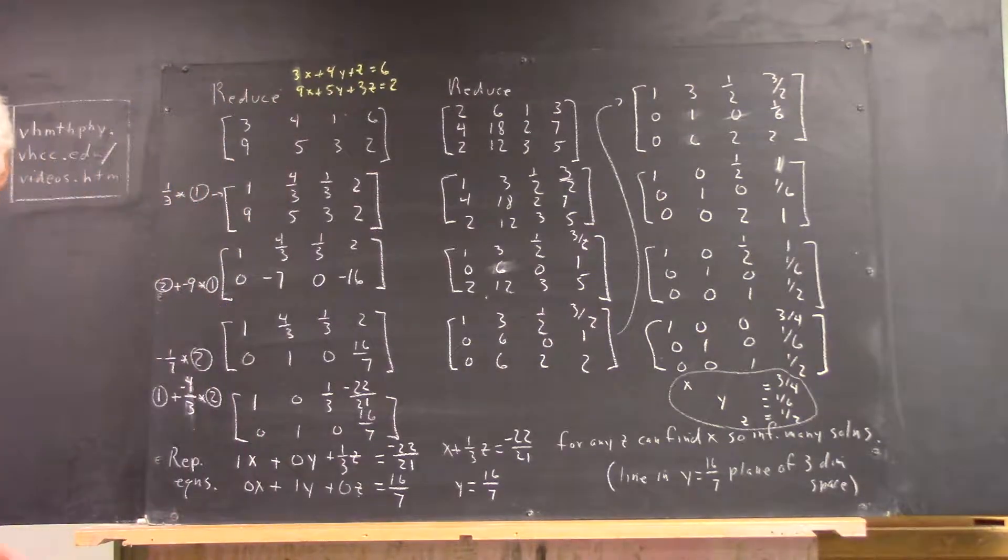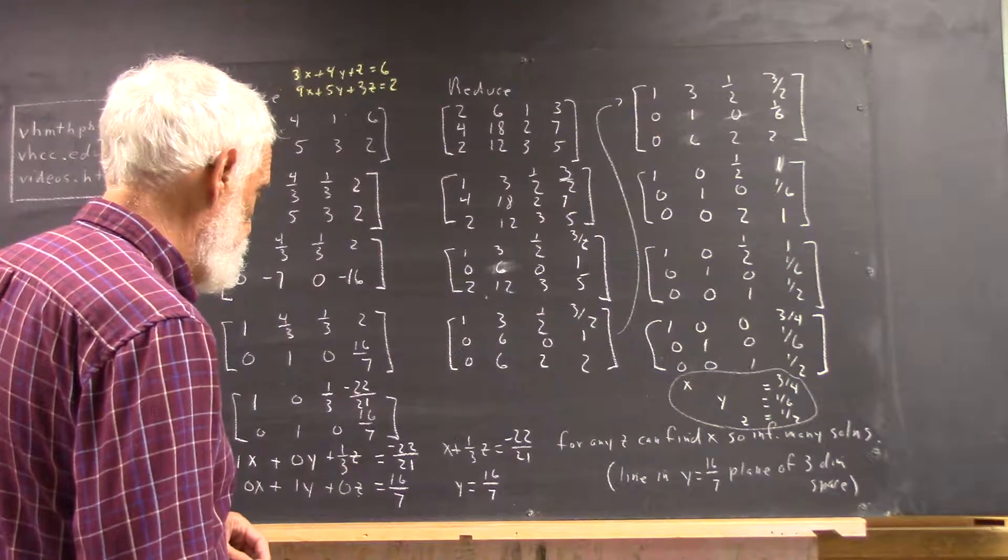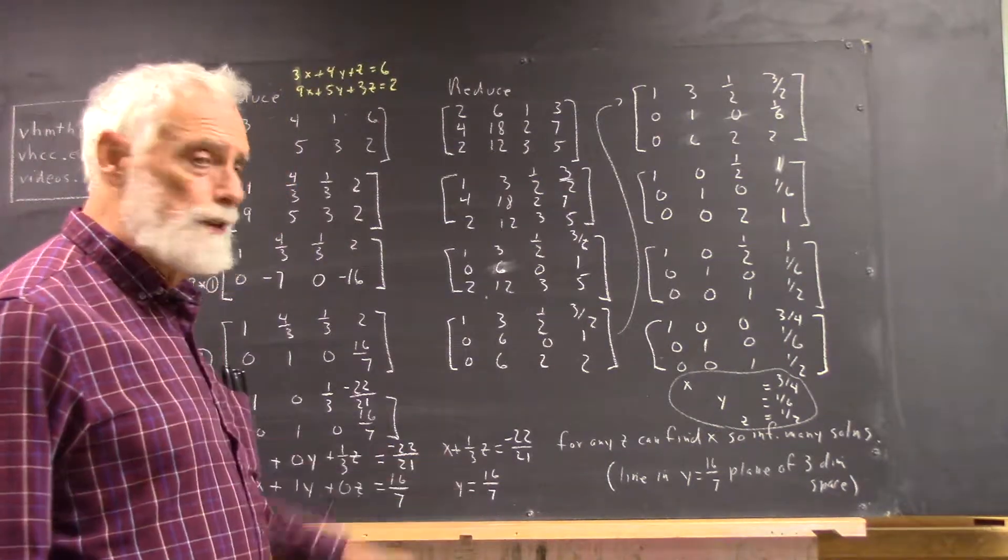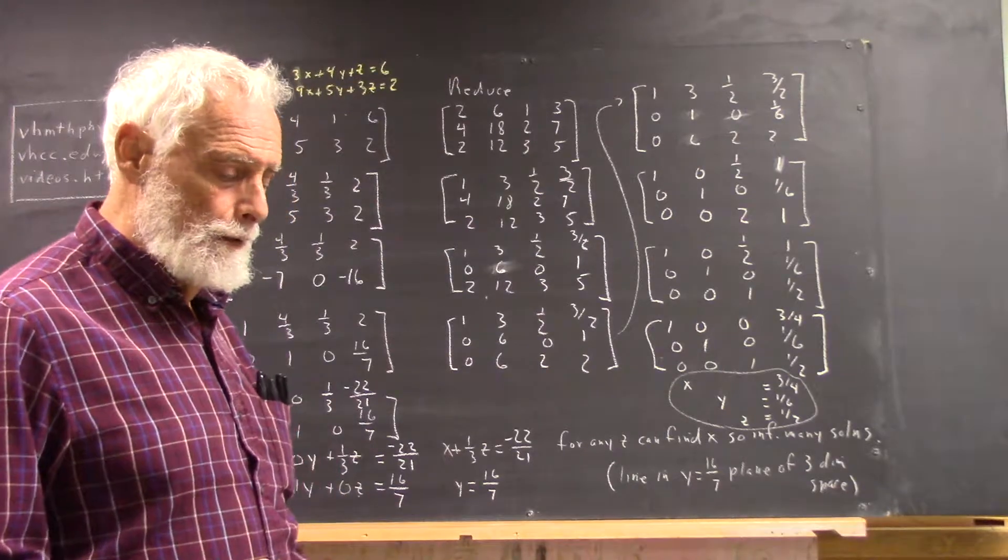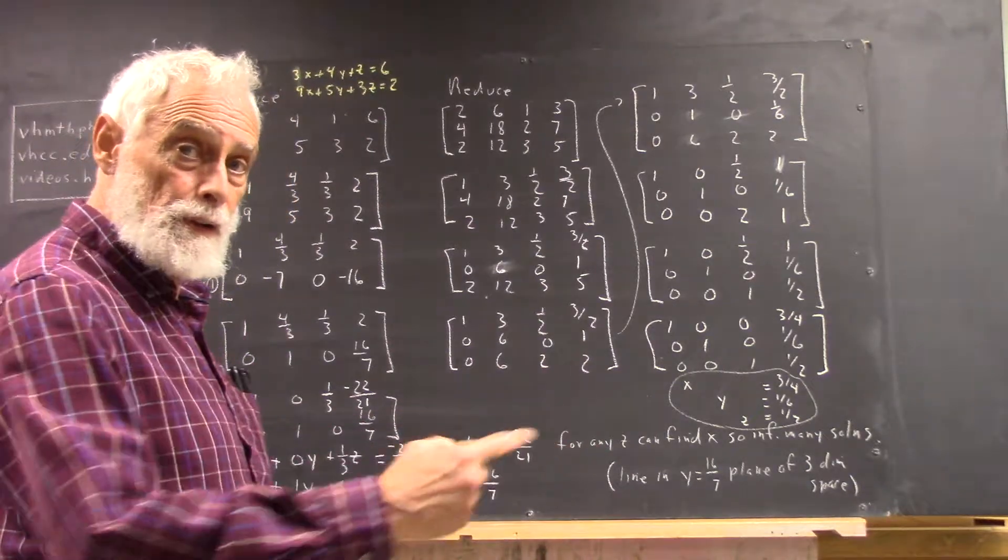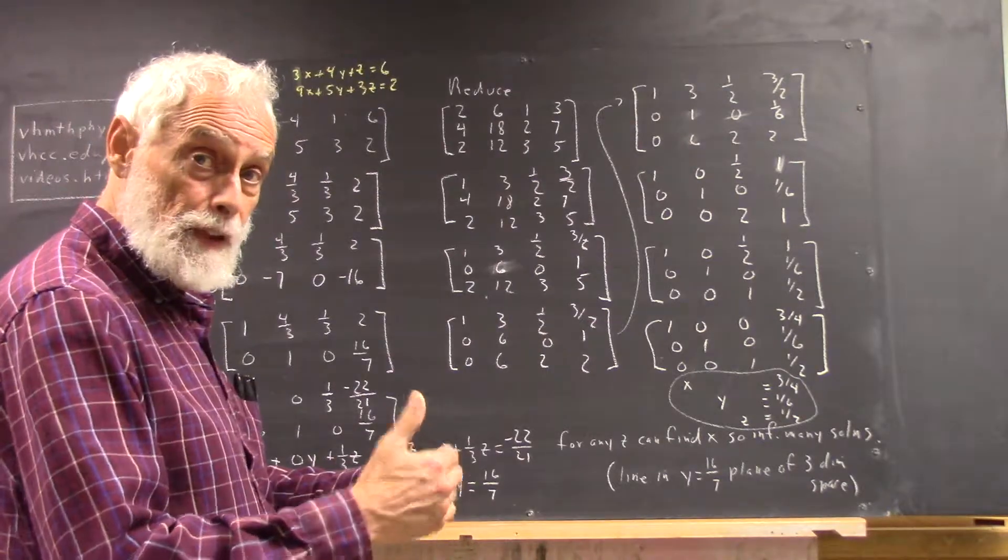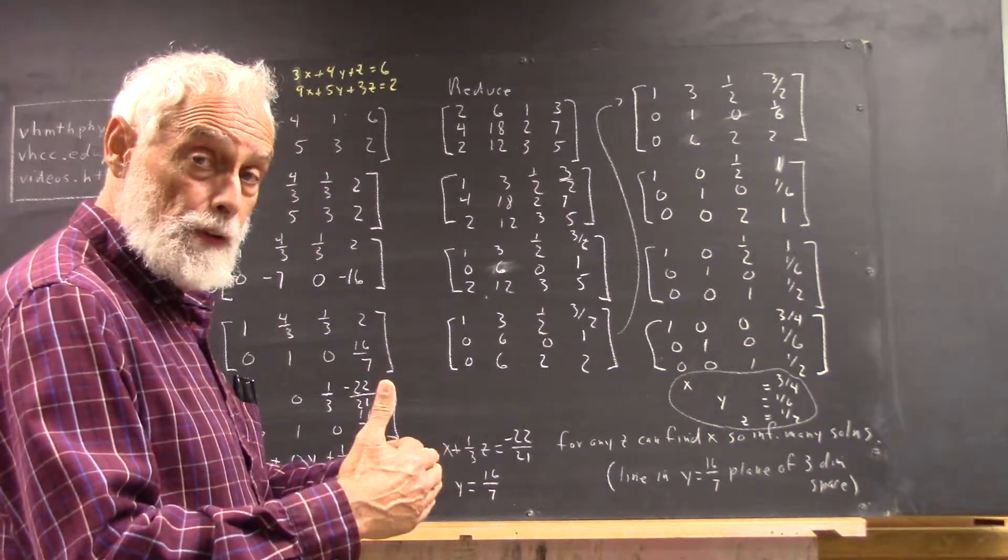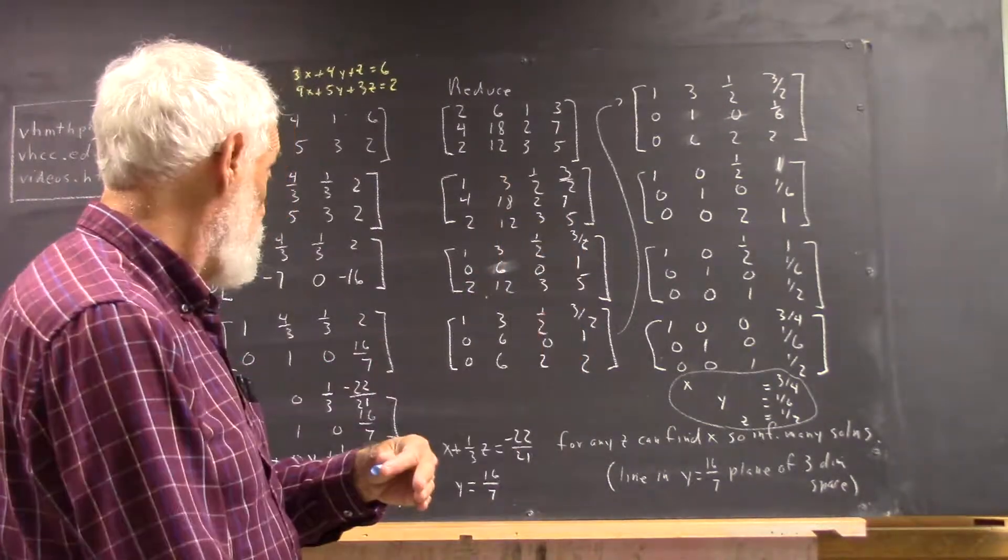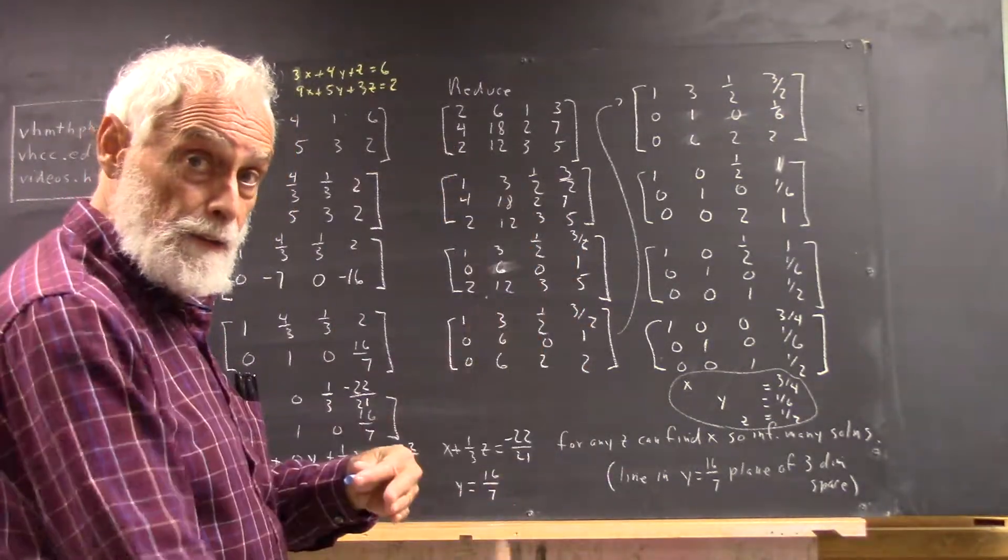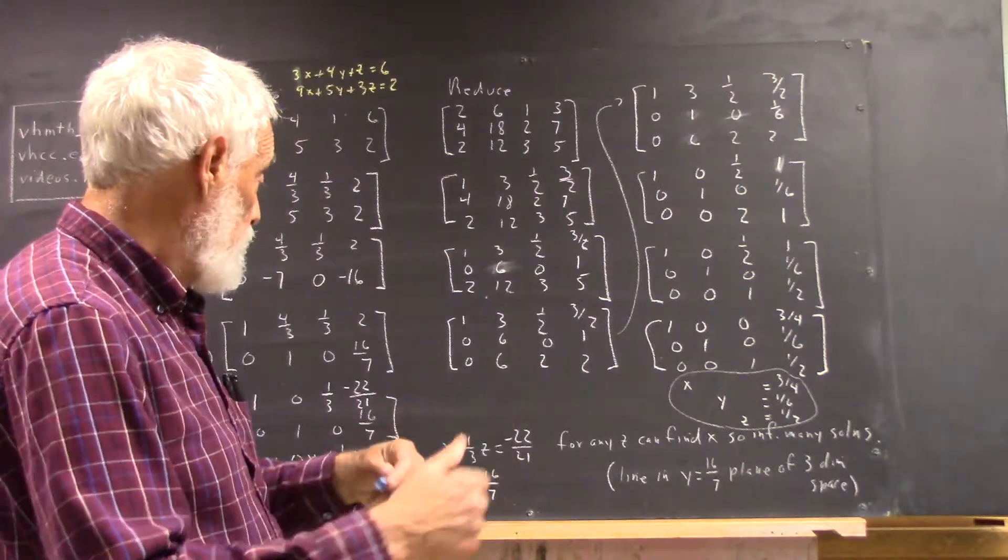Now, for interpretation, because this is actually quite interesting, y equals 16 sevenths in three-dimensional space. If you have x, y, z, then y equals 16 sevenths is, if this is the origin, that's out here, and that's a plane. All the points where y equals 16 sevenths lie in a plane through the point where y equals 16 sevenths.